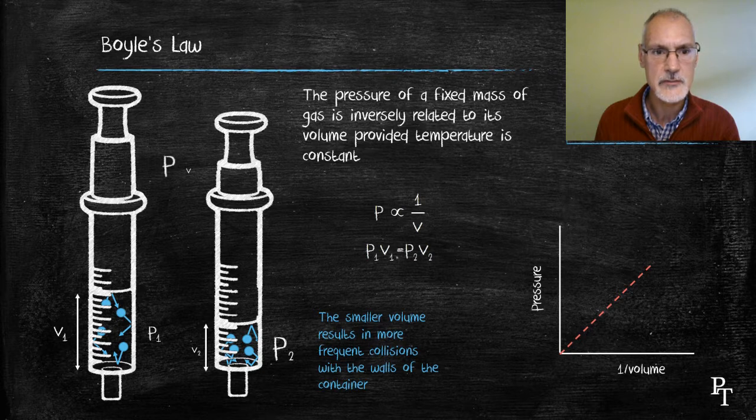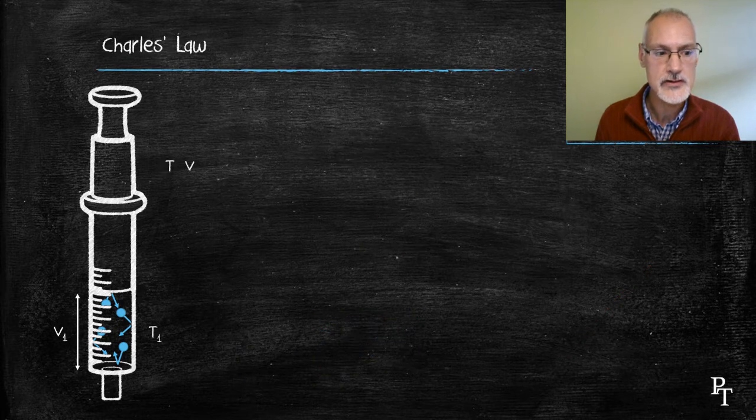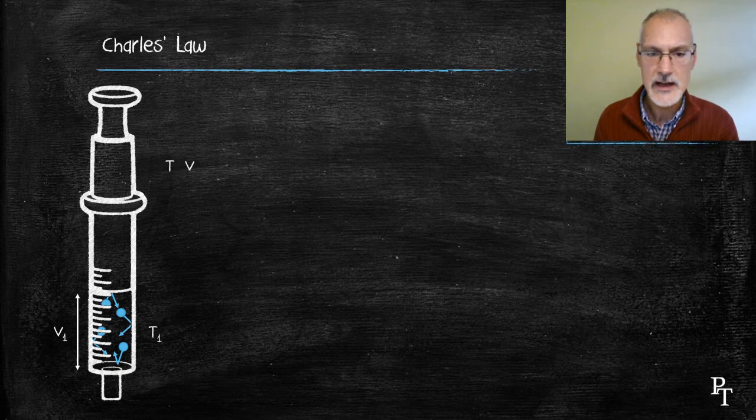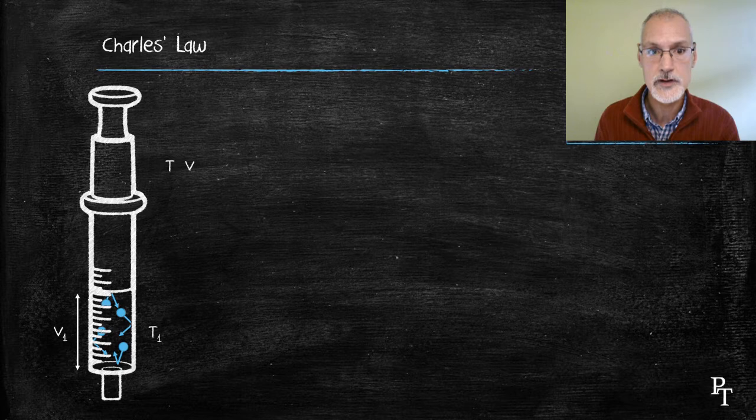Charles studied the connection between temperature and volume, keeping the pressure constant. So again, I have my syringe, perhaps at room temperature, and I'm going to subject it to an increase in temperature, perhaps by placing it in a container of boiling water. How does the volume respond?